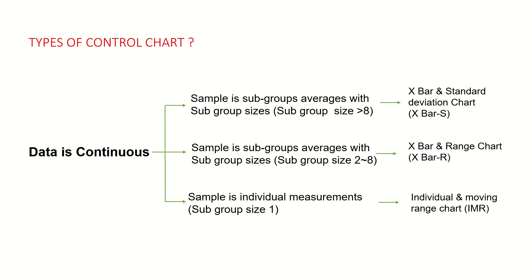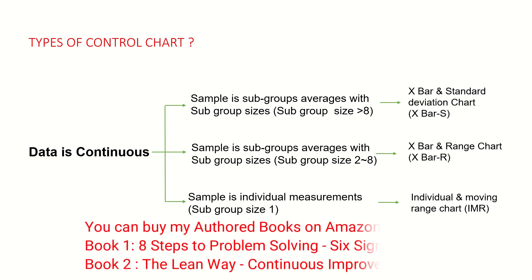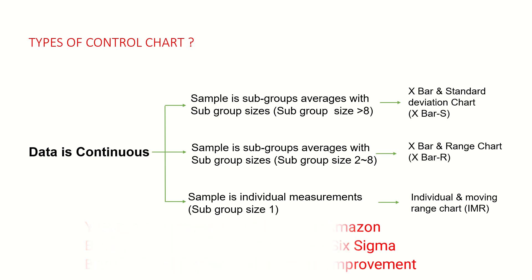Before we go into Minitab, let's understand what is a subgroup size. Suppose you have a team of 8 people and you collect one data point from each individual — your subgroup size becomes 1, since one agent is a subgroup. If you collect two data points from each individual, your subgroup size becomes 2. I have this data already in Minitab, so let's go see how these three types of charts are created.